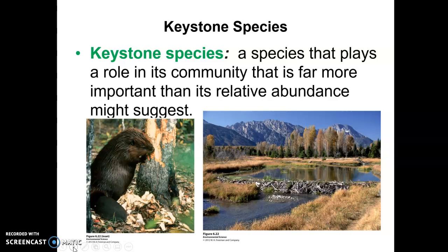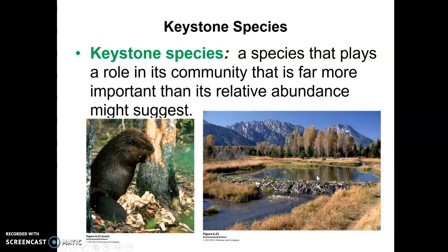An example here is a beaver. You're only going to find a few beavers in a particular area, but they build dams behind which water collects. That can be critical for a particular habitat during dry seasons, providing a source of water and living conditions for many species. So the beaver is considered a keystone species.